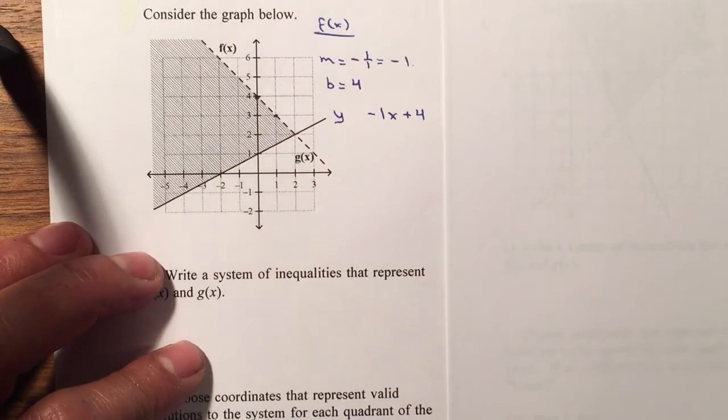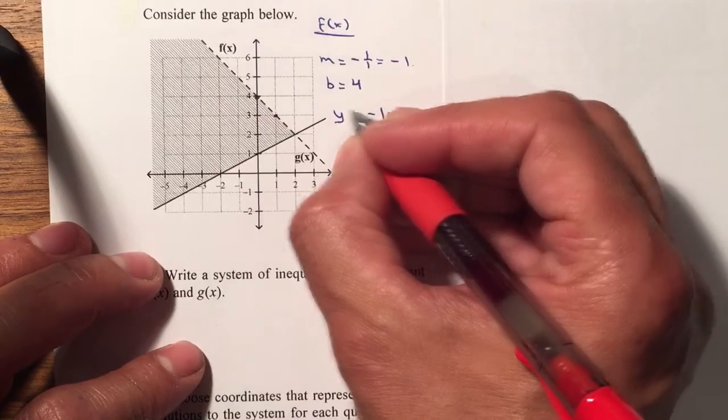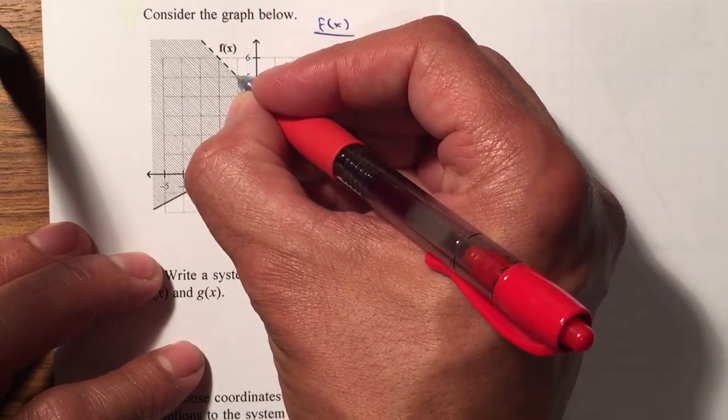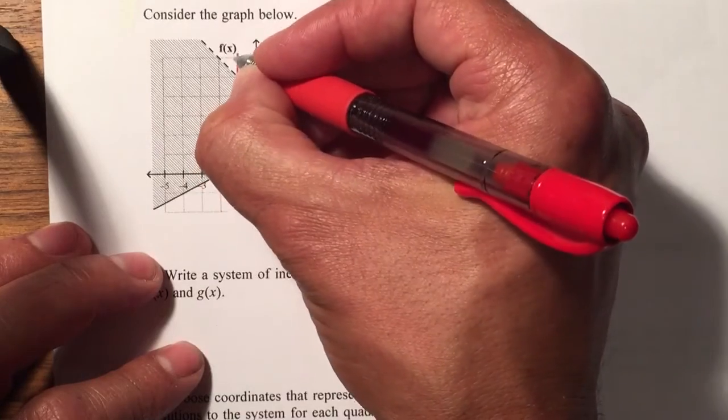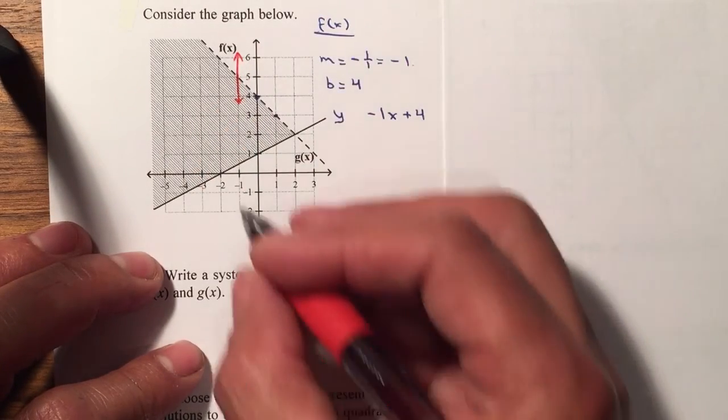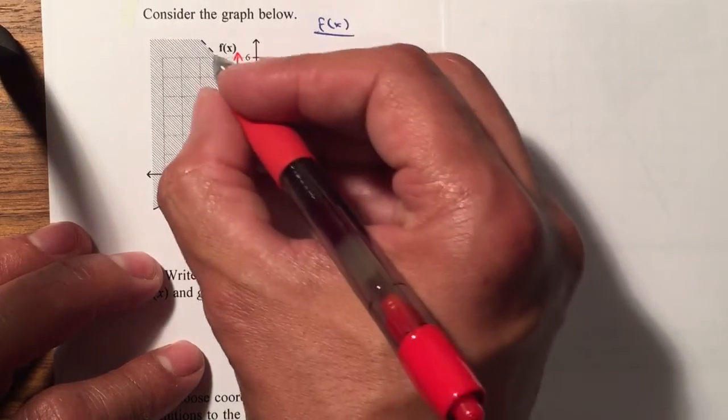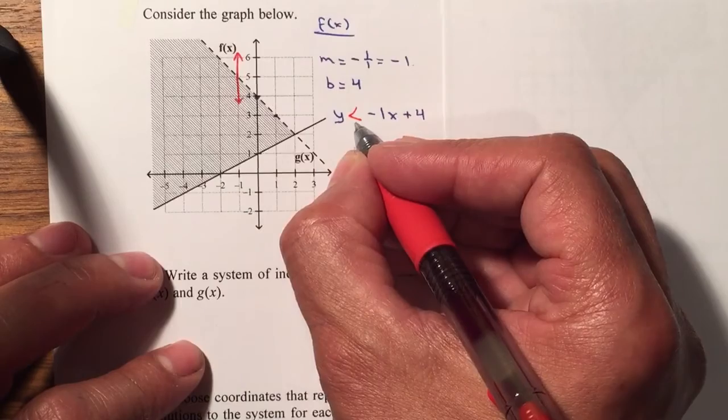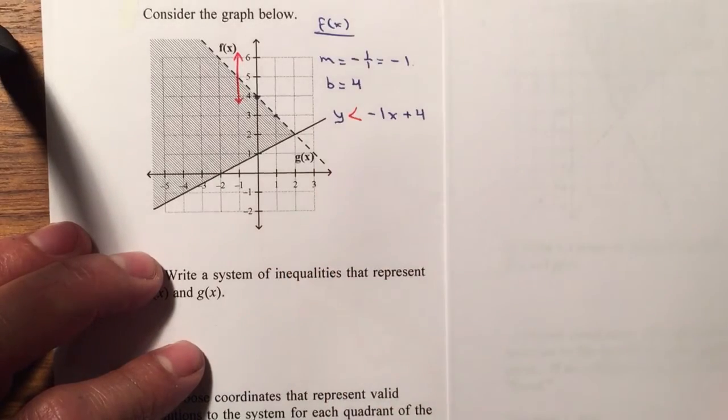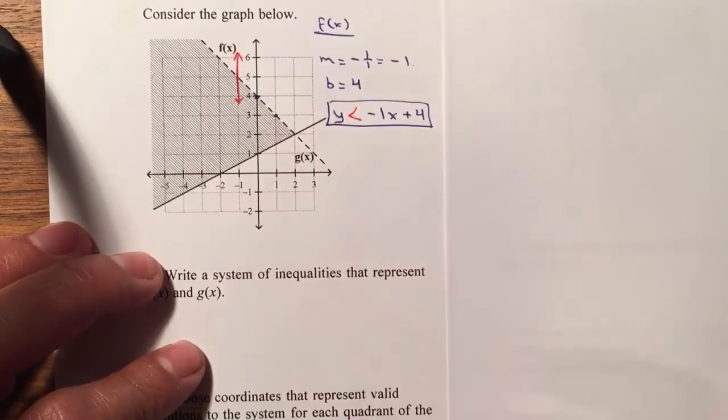And I need to decide whether it's less than or greater than. I'm going to place a down arrow and an up arrow. And did they shade the top or the bottom? They shade the lower side, so therefore it will be less than. This is dash, so you do not need an equal sign. So this is the equation for f of x, or the inequality.